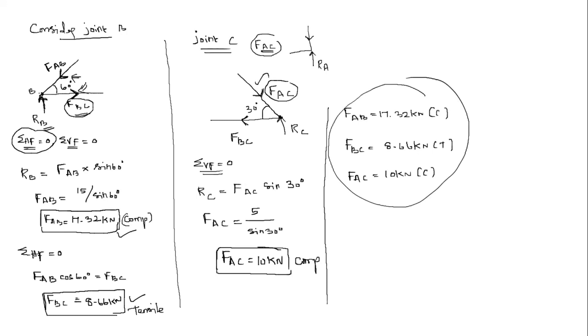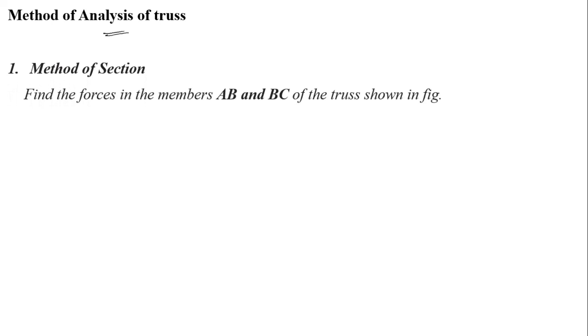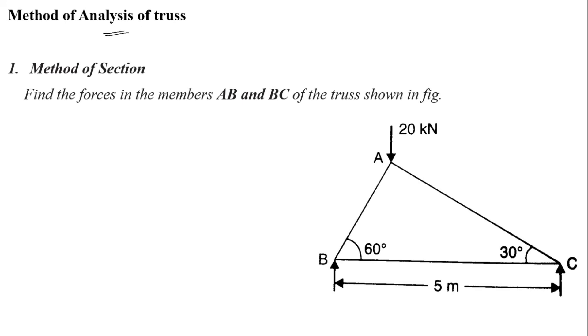So to summarize the method of joints results: FAB equals 17.32 kilo Newton (compressive), FBC equals 8.66 kilo Newton (tensile), and FAC equals 10 kilo Newton (compressive). This is how we solve the problem using the method of joints.